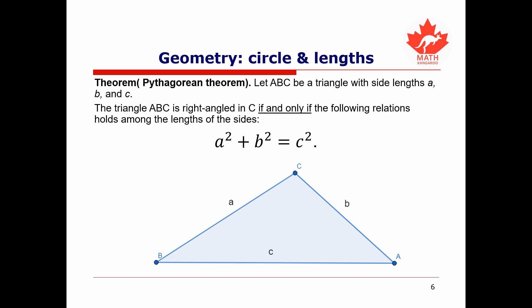Finally, let's review the Pythagorean theorem. If we have triangle ABC with side lengths a, b, and c, this triangle is right-angled at C if and only if a squared plus b squared equals c squared. So we know the triangle is right-angled if a² + b² = c², and if we know it's right-angled then we know a² + b² = c².